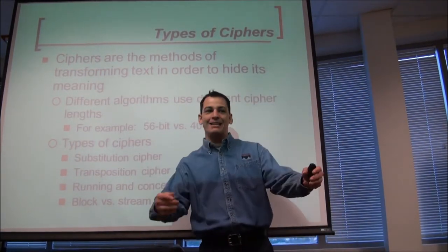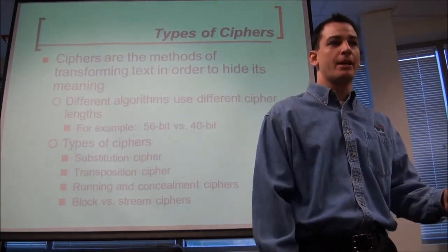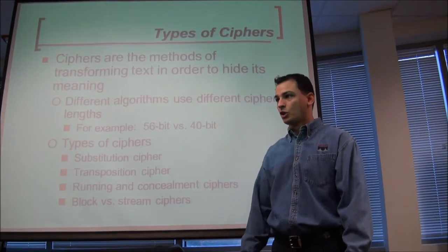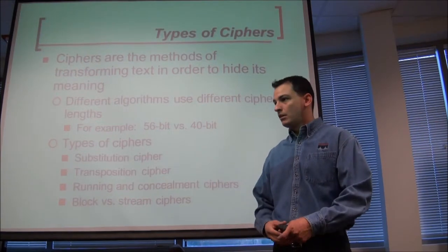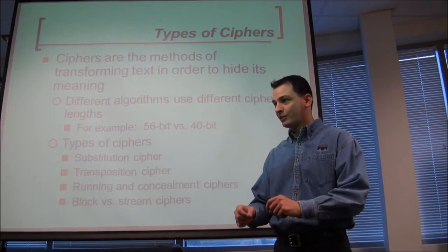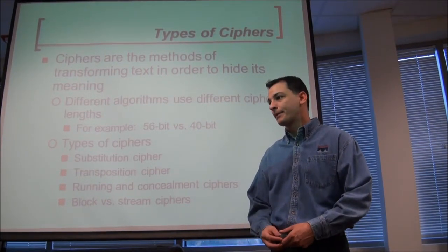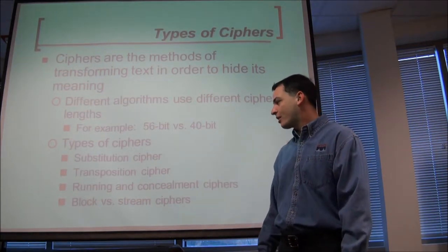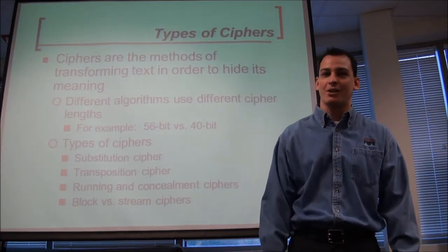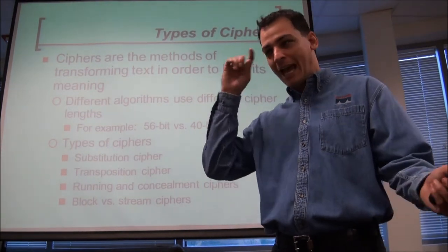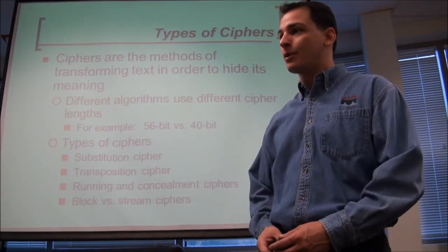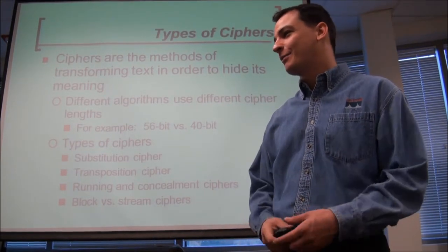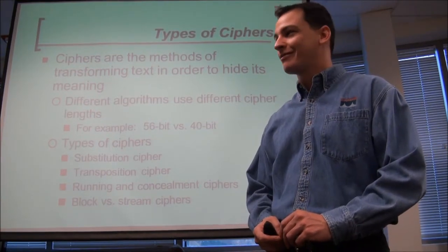Transposition means you can't take one out and replace it with another, but you can scramble it. Think of a Rubik's Cube — you can't take the pieces out, but you can move them around. Running ciphers involve interrelated steps; following the steps uncovers the message. Concealment ciphers hide a message in plain sight — only a subset of data is valid. For example, every fourth word means something. You can even find messages using the first character of every word to build a new word.